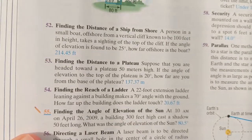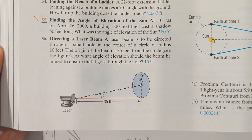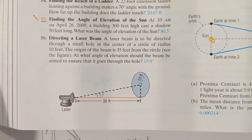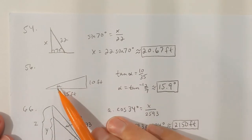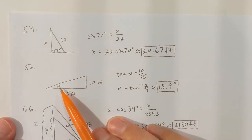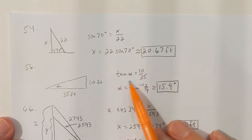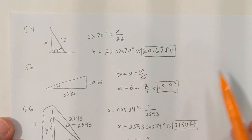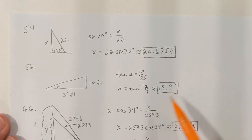Problem 56: a laser beam is directed through a small hole in the center of a circle of radius 10 feet; the origin of the beam is 35 feet from the circle. At what angle of elevation should the beam be aimed? I know the opposite side (10 feet) and adjacent side (35 feet), so tan(alpha) = 10/35 = 2/7. Taking tangent inverse, alpha ≈ 15.9 degrees.